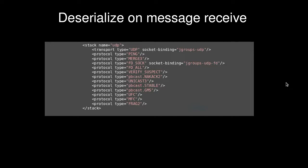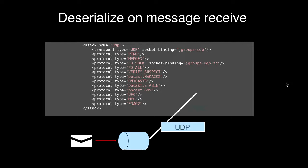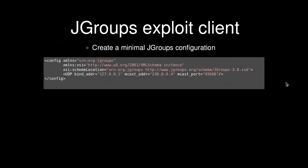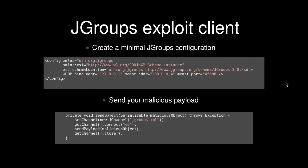This is the JGroups clustering stack as it looks in the configuration. When a message comes in, the UDP protocol takes the message off the network and starts processing it through the stack from the top down, doing all the processing steps. It just so happens that deserialization occurs very early in that stack. To exploit this, it works by putting a packet onto the UDP network and sending a malicious object in — so it was very easy to exploit if you're on the network.